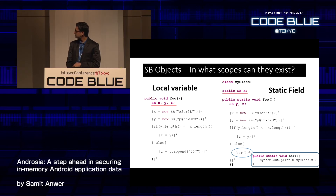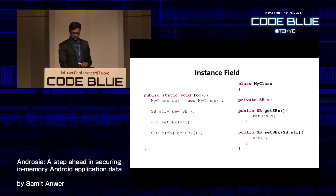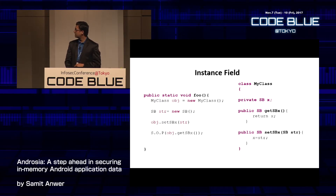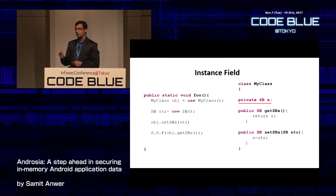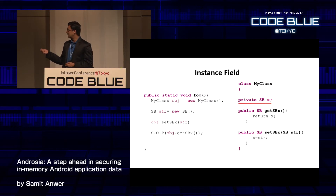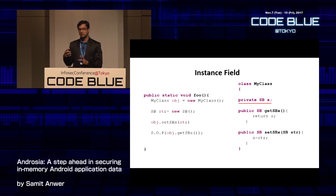A StringBuilder can also exist as an instance field of a class. With a private access modifier, the scope of x is limited to the scope of the MyClass object — when not using that object, the StringBuilder reference x cannot be accessed. The scope is limited to the class encapsulating the StringBuilder instance field.